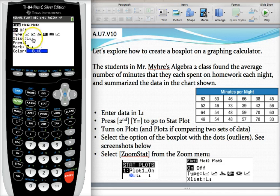Make sure X list says L1. It should say that by default. And then we'll go ahead and take a look at this box and whisker plot.